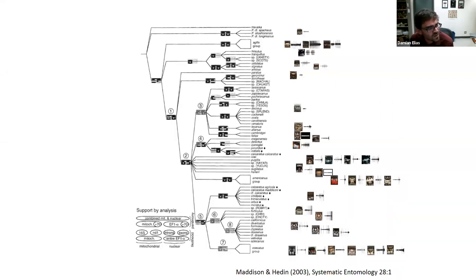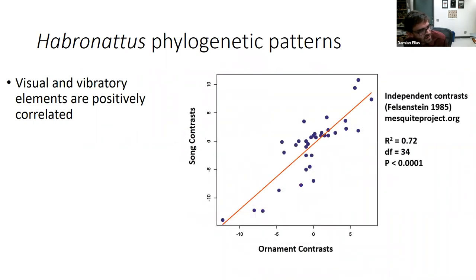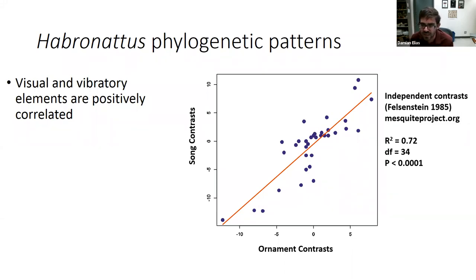You see a whole bunch of different types of displays across the genus. What we found, both with and without phylogenetic correction, is an incredibly strong positive correlation between visual and vibratory elements — the opposite of what we predicted. Species that were doing very little had simple visual ornaments and simple vibratory displays, while species that were incredibly ornamented also had more elaborate and more vibratory signals. We found this synergistic, positive relationship between visual and vibratory signals.